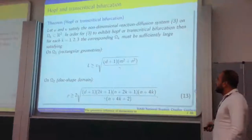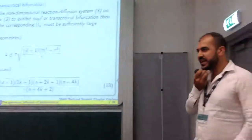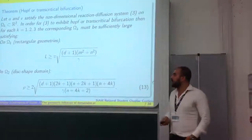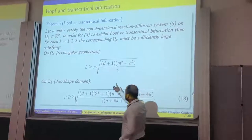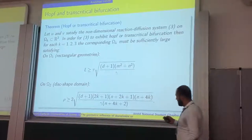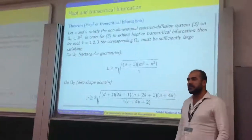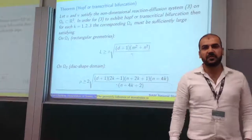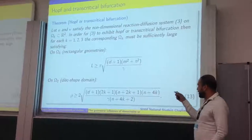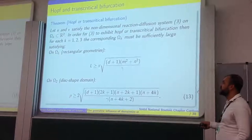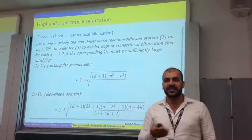We find that for Hopf or transcritical limit-cycle behavior — so if we require a reaction-diffusion system of Turing type to exhibit temporal bifurcation of a spatial pattern — then for a rectangle, it has been shown that L, the side length, has to be chosen large enough satisfying this inequality. It is kind of directly proportional to the square root of D and inversely proportional to the square root of gamma. Gamma is the reaction scaling parameter and D is the non-dimensional diffusion ratio. M and M_R are positive integers.